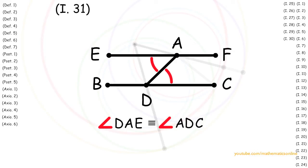Therefore by Proposition 27, the two straight lines EF and BC must be parallel.